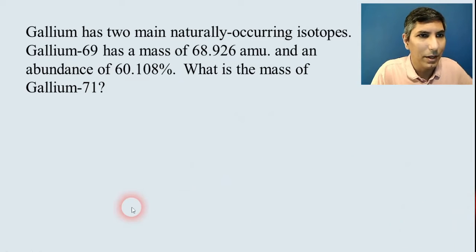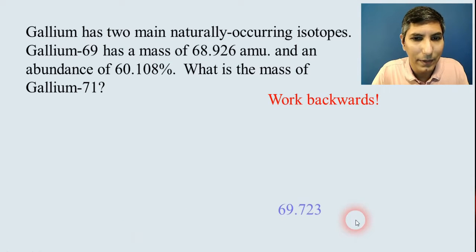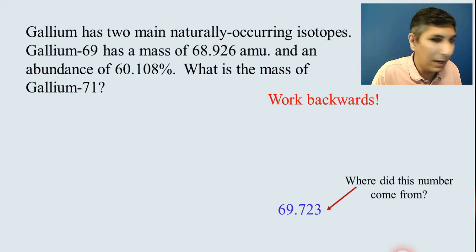Sometimes, you may have a problem like this, where it says that gallium has two main naturally occurring isotopes. Gallium-69 has a mass of 68.926 AMU and an abundance of 60.108%. What is the mass of gallium-71? So, it looks like we have a puzzle here, because we're not being asked what's the average atomic mass of the element. We're being asked to essentially work backwards and find the mass of one of the isotopes. You can set the problem up the same way. What I would do is I would start by writing down this number, the 69.723, and you might be wondering where in the world does that number come from? Because that's not in the problem. Well, that is, in the periodic table, that is the average atomic mass of that element from the table, 69.723.